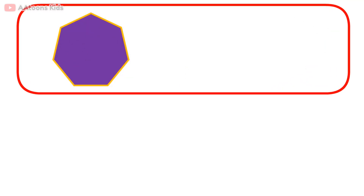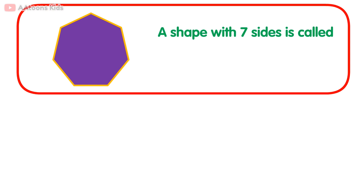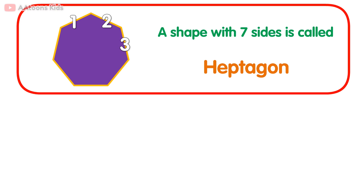A shape with seven sides is called hexagon: one, two, three, four, five, six, seven.